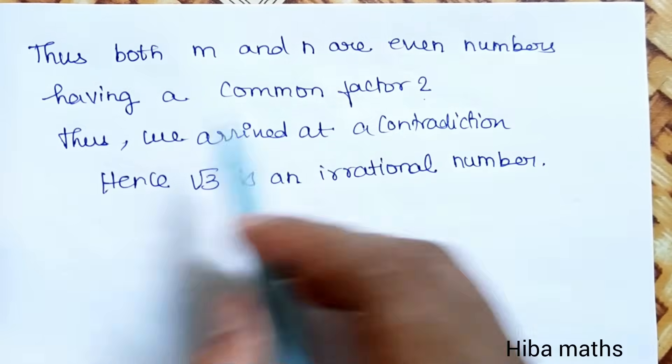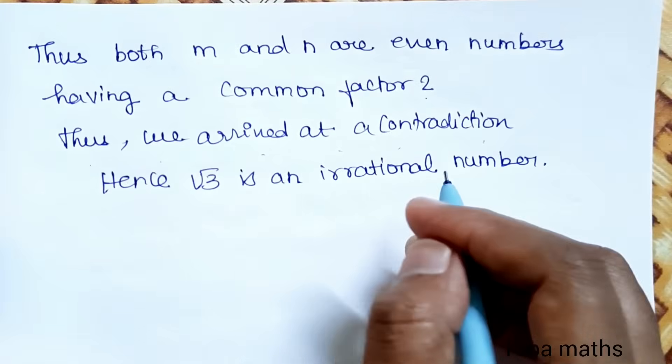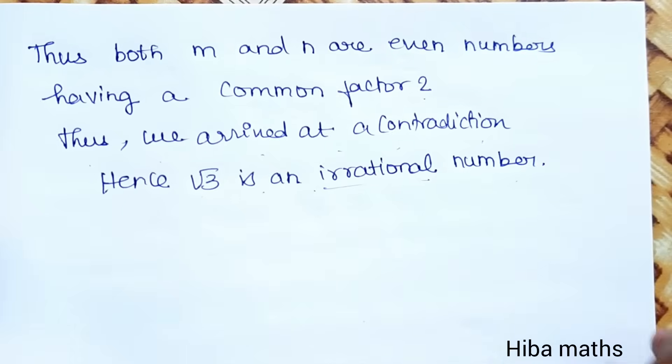Having a common factor of 2, thus we arrived at a contradiction. Hence, root 3 is an irrational number.